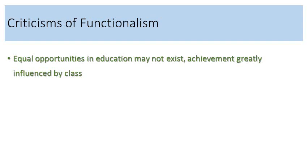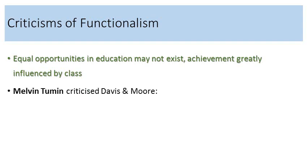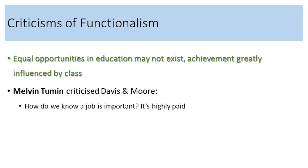In terms of some criticisms of functionalism, equal opportunities in education may not actually exist, and achievement is greatly influenced by class. We still find today that the middle class outperforms the working class, despite efforts by various governments to bring about true meritocracy and true equality of opportunity. Melvin Tumin criticised Davis and Moore by asking: how do we know a job is important? Davis and Moore would respond by saying it's highly paid; Tumin would then ask why some jobs are more highly paid than others — because they're important — leading to a circular argument.